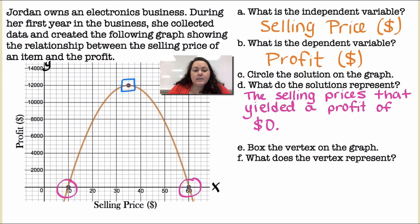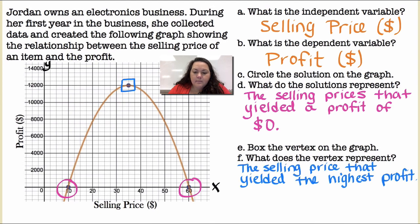Box the vertex. So I have a box there at the vertex. And again, that's where it's going from increasing to decreasing. What does the vertex represent? The selling price that yielded the highest profit. Okay, so that was, if you sell it at $35, your profit is going to be $12,000. So that's the best price that you should sell it at to make the most amount of money.